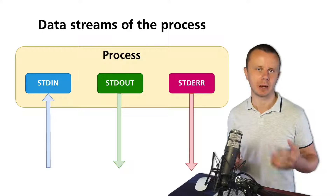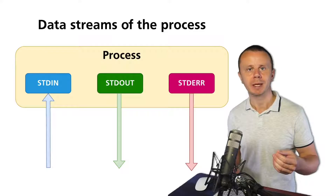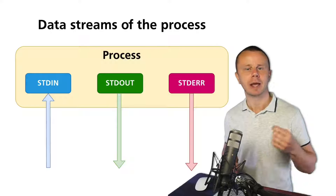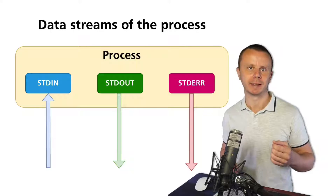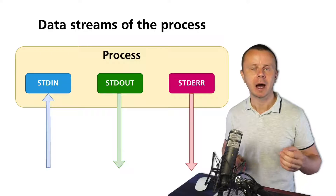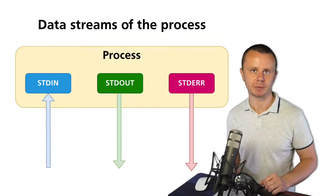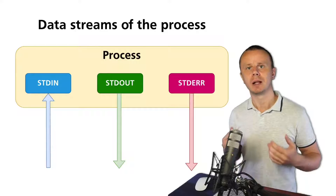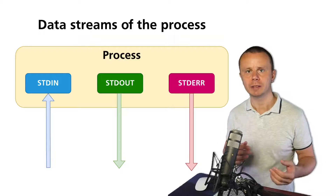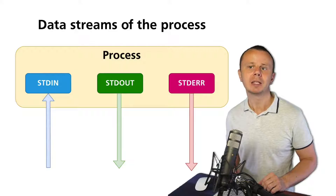Standard in is an inbound data stream — it comes into the process. Standard out and standard error are outbound data streams. Please note that stdout and stderr are two different, separated data streams, which means you are able to redirect different streams to different other processes.